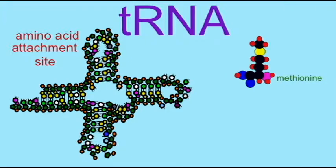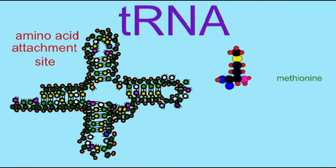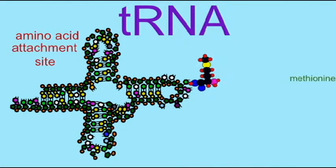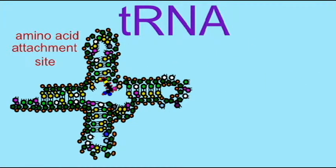It can be argued that the genetic code really only exists in one or two areas of the cell. The tRNAs and the enzymes which attach the amino acids to them are the only places where both the language of the DNA and RNA codons and the significance of different amino acids for the construction of protein coincide.